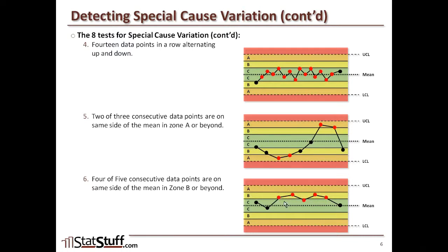At least four out of five observations happen to be occurring within Zone B — above or below — that would indicate something is happening, possibly special cause variation that we need to explore further.